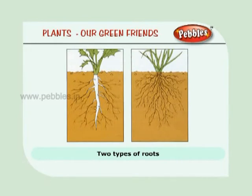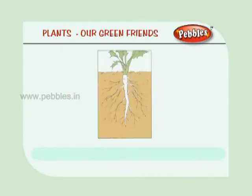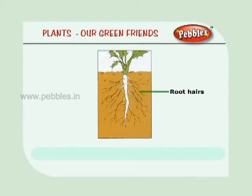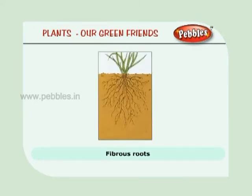There are two types of roots: taproot and fibrous roots. Root absorbs water and mineral salts from the soil. The main root is called taproot. It has many branches and ends with tiny root hairs. A cluster or group of small roots are called fibrous roots.